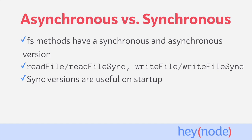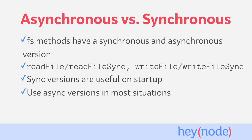Synchronous versions are useful when you want to load data before the rest of your code runs. An example would be loading config data on startup. Most often, you'll want to use the asynchronous version to avoid blocking the main thread of your program.